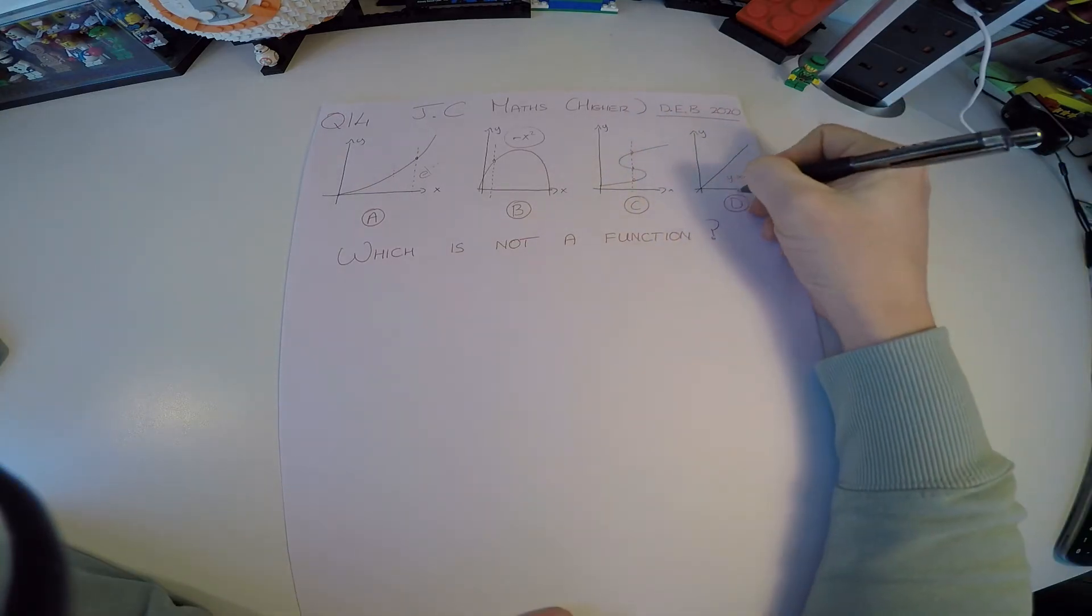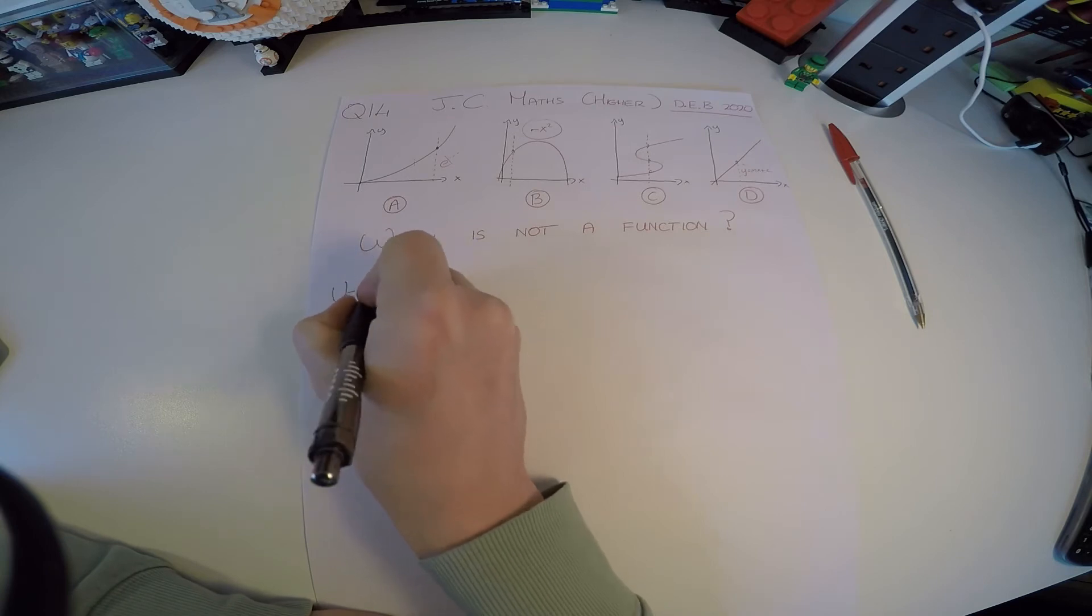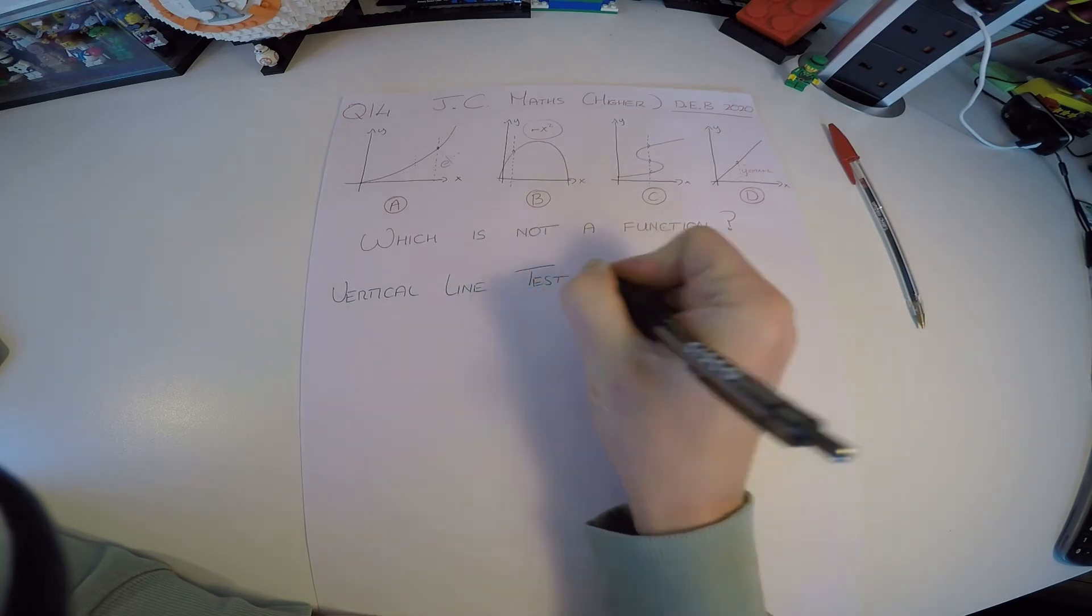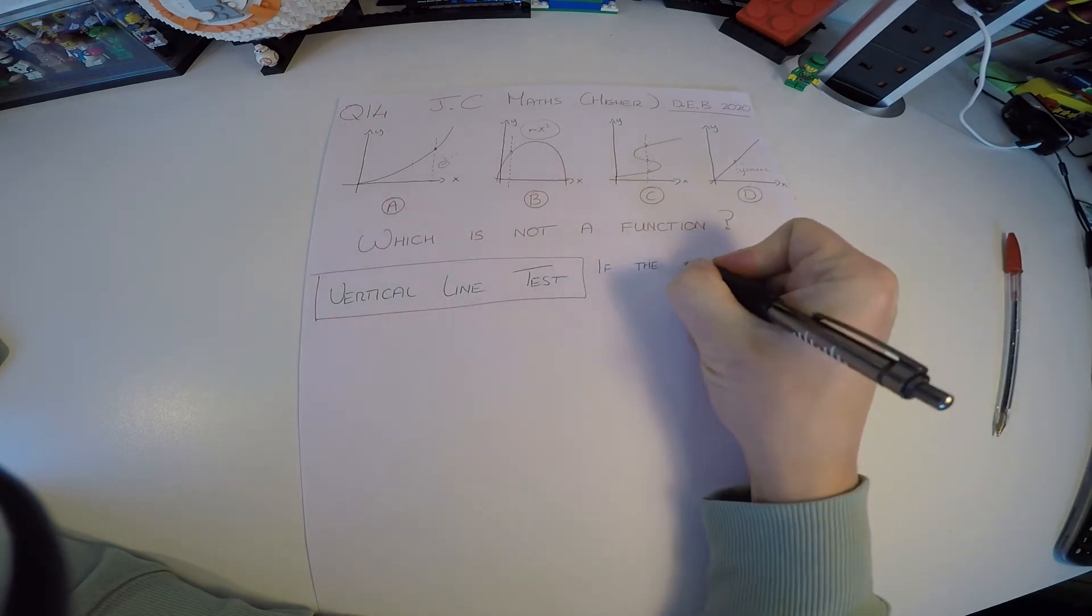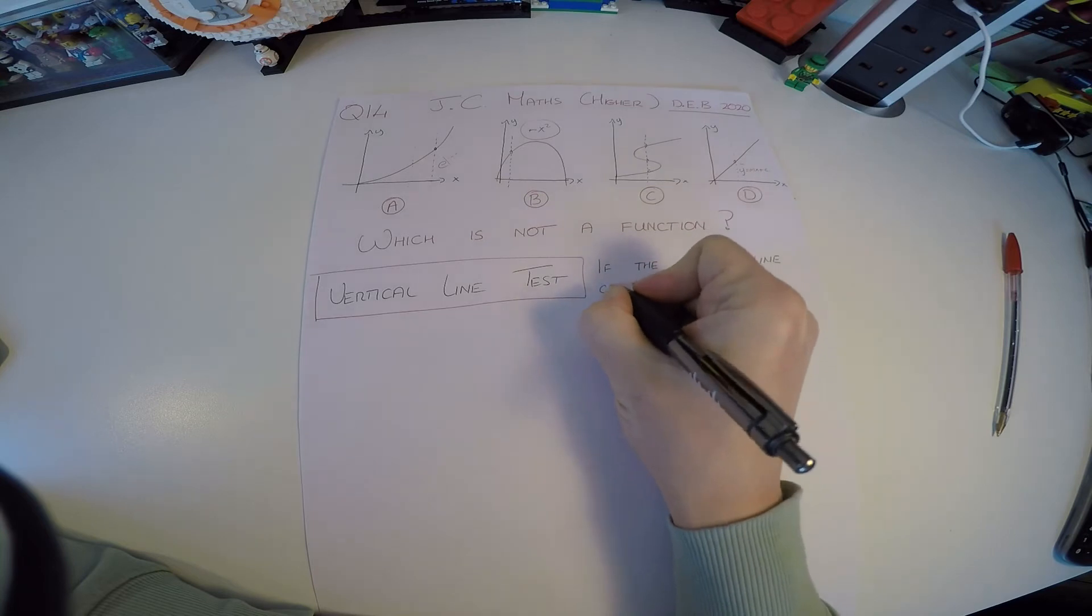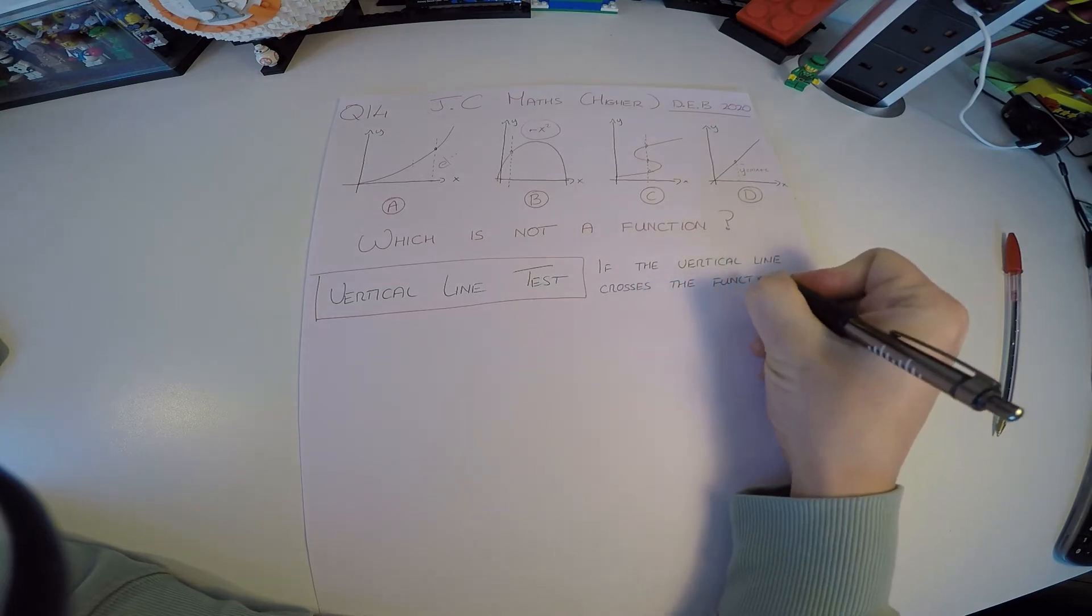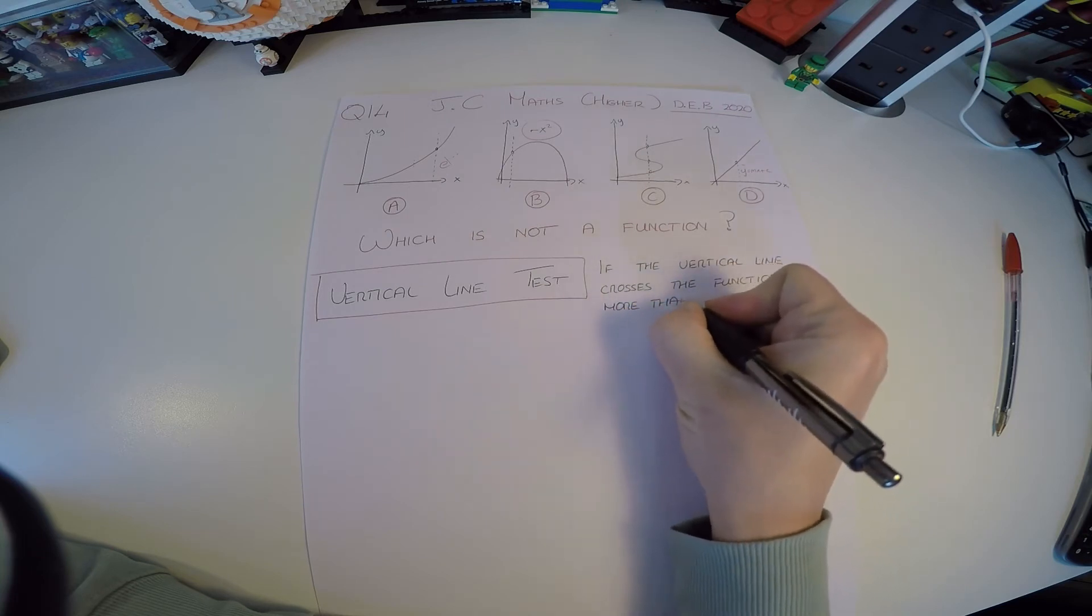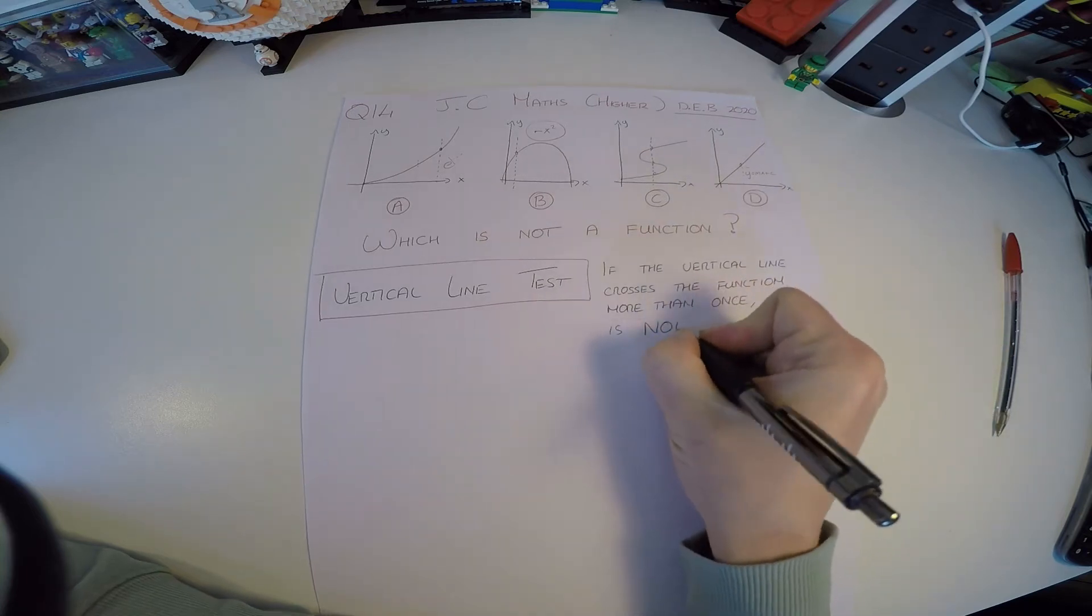Okay. This one again, any vertical line I draw is only going to cut that line once. So what we're actually looking for here is to test a function with the vertical line test. So the vertical line test says if the vertical line crosses the function more than once, it is not a function.